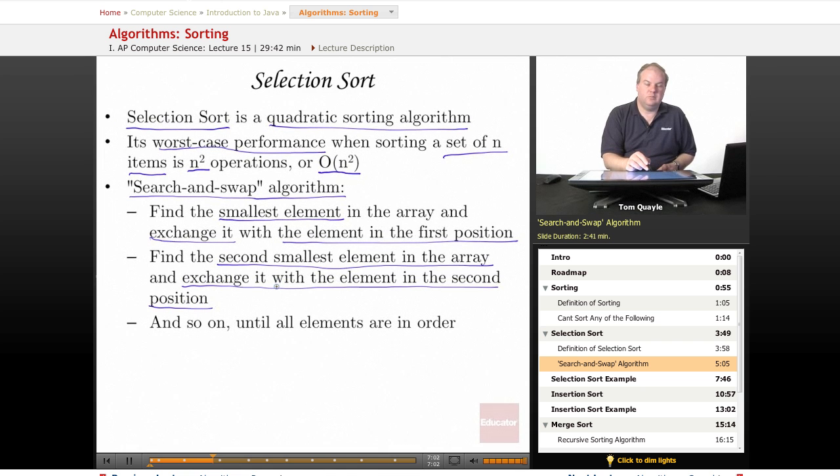So then positions one and two would have the smallest and second smallest elements respectively, and whatever was in position two, the second position, now ends up in whatever position the second smallest element was originally in. And so on, and we repeat until all the elements are in order, which means until we've reached the end of the array.